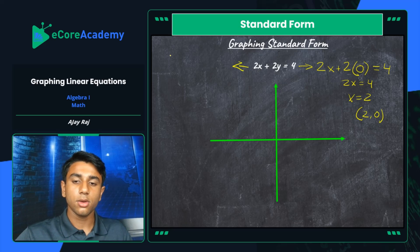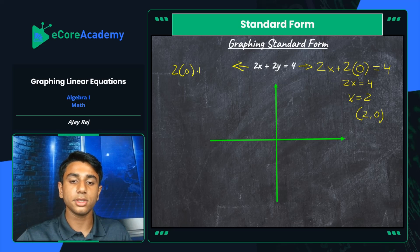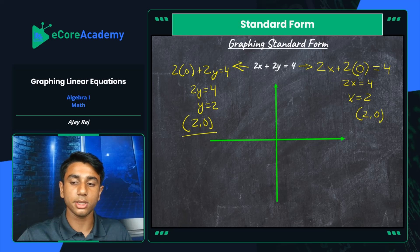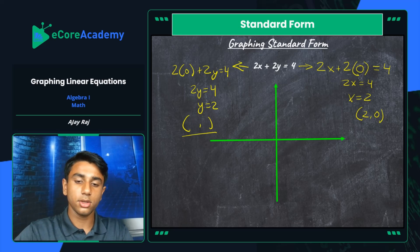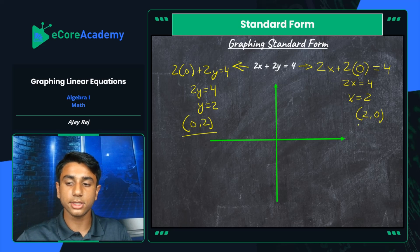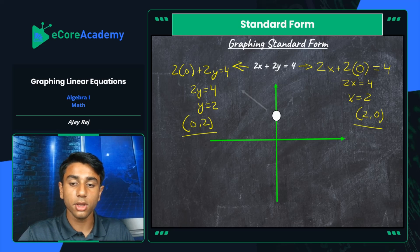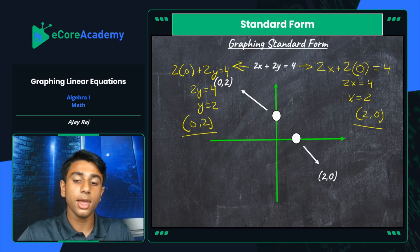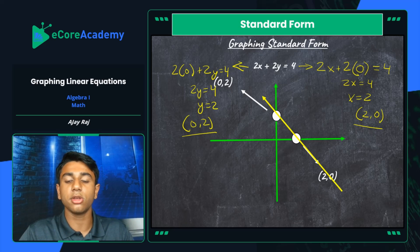Then we calculate the y-intercept by setting x to zero: 2 times zero plus 2y equals 4, which simplifies to 2y equals 4, so y equals 2. Our y-intercept is the point 0 comma 2. Now that we have both points — x-intercept at 2 comma 0 and y-intercept at 0 comma 2 — we plot both of those points and simply graph our line that intersects both cleanly. This is the representation of 2x plus 2y equals 4 as a graph.